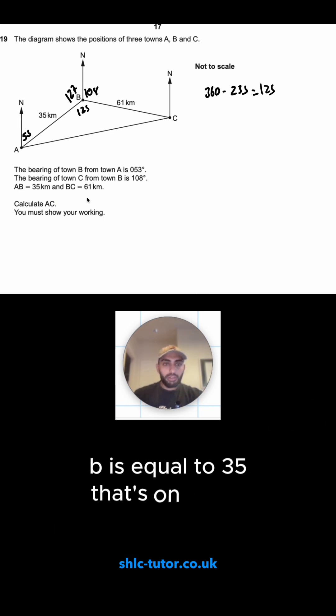AB is equal to 35, that's on, and BC is equal to 61, so that's on as well. I could also find this angle if I wanted to. That angle would be co-interior, so that one would be 72.